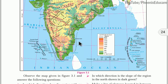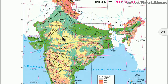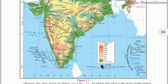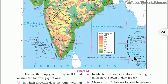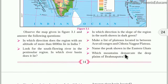We have different types of regions in India: mountains, plateaus, plains, desert, coastal plains, and islands. Let us see what are the different physiographic divisions of India and the characteristics of each physical division.